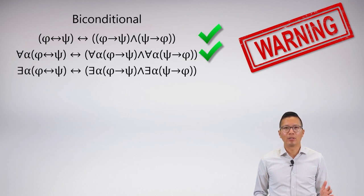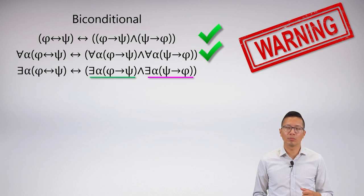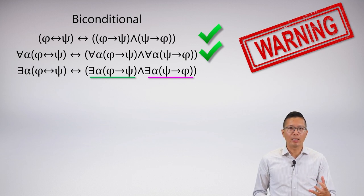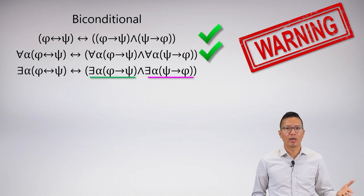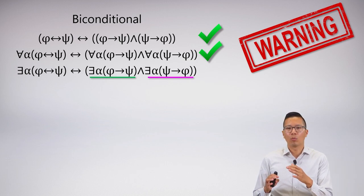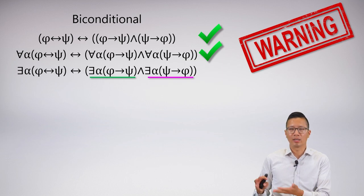The problem happens is when we try and do this with an existential. If I have there exists alpha, phi biconditional psi, can I split that up into the two sentences like this? And it turns out the answer is no. And if you look closely, you can sort of see why. The one in the green, that's saying something has this property that if it's a phi then it's a psi. And the one with the purple is saying that something has a property if it's a psi then it's a phi.